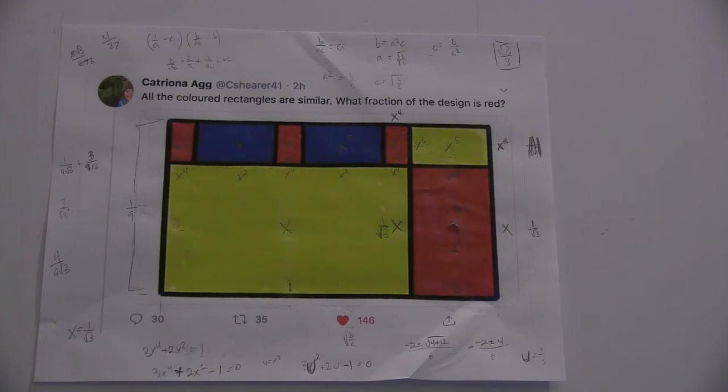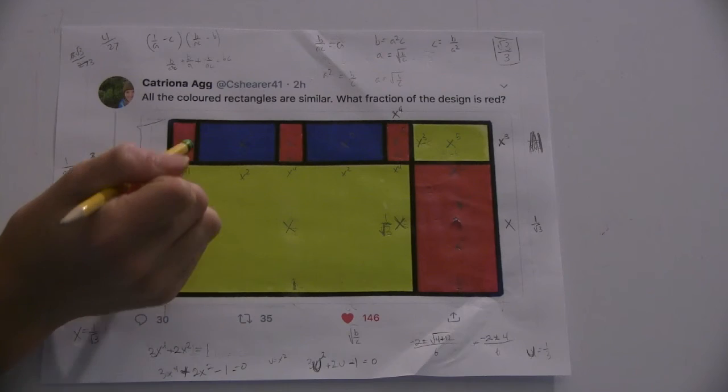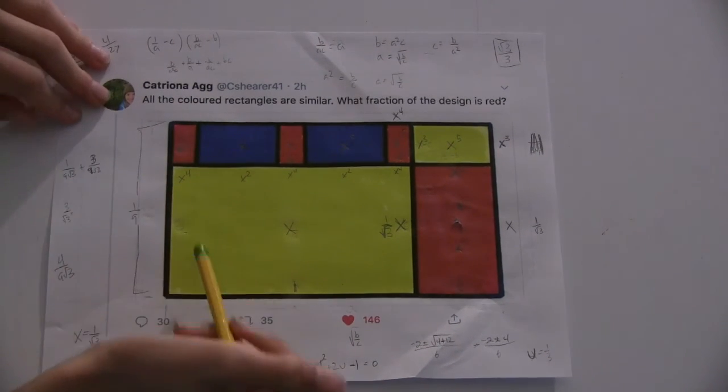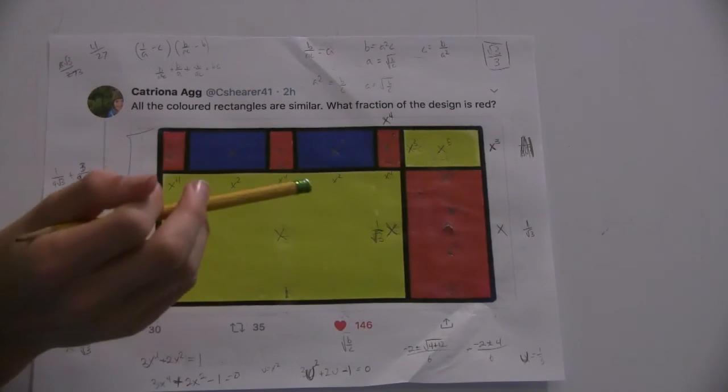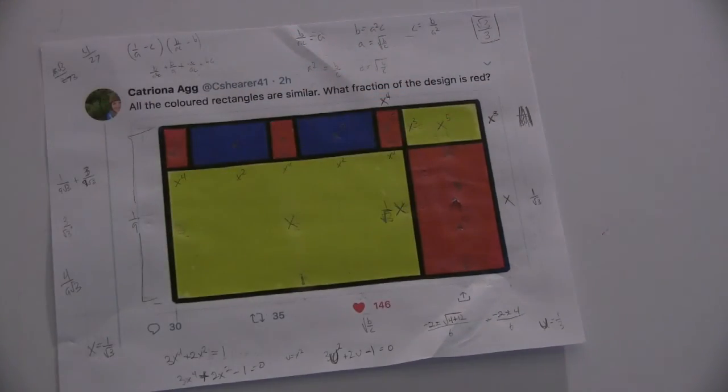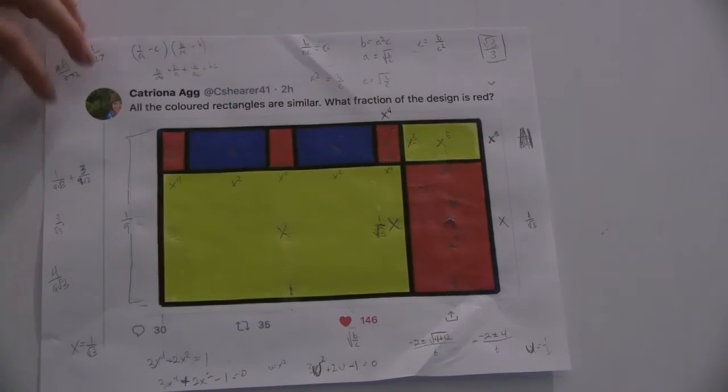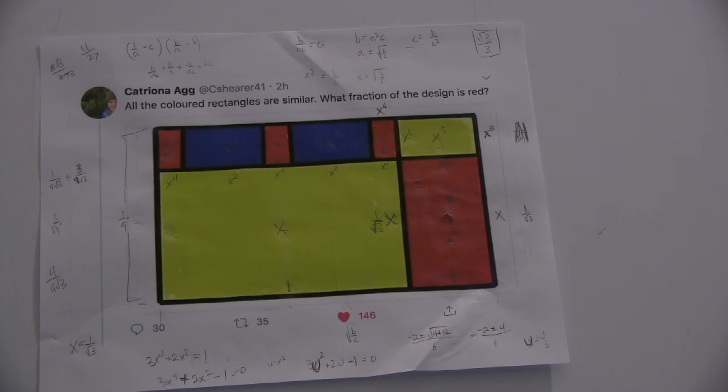And I think x turned out to be root three over three, or one over root three. And then from there you can just get the total area by calculating just this side length here, one plus x squared, and x plus x cubed, or times x plus x cubed. And then just calculate the areas of the red rectangles, which is 3x to the 7 plus x cubed. And that turned out to be, I think, one quarter of the total area.